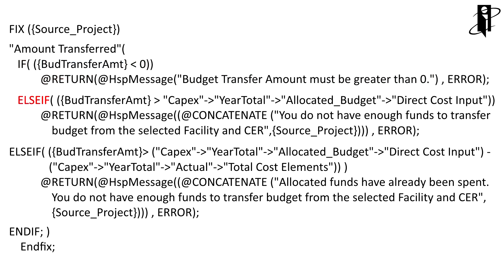The next condition is if the budget transfer amount is greater than the allocated budget that exists for the source project, we want to return a message that says you don't have enough funds to transfer this amount from the source project. One interesting thing is that in the @RETURN function, I can actually embed other functions like the concatenate function, and I can also pull in the source project — a runtime prompt variable the end user enters — so it actually tells them the specific project that doesn't have enough funds.